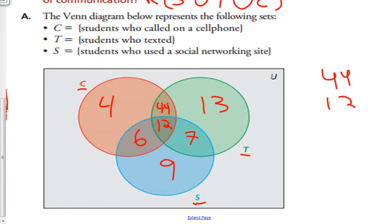44 plus 12 plus 6 plus 7 plus 13 plus 9 plus 4. If we add those all up: 40, 60, 70, 80, 95. So 95% of students used at least one of these three ways to get in contact with friends.